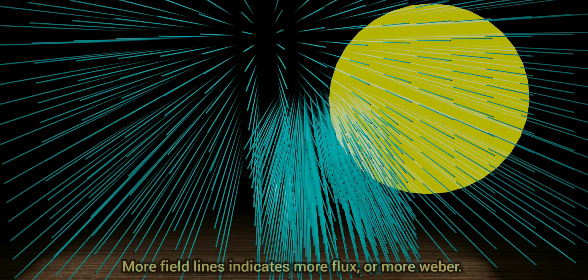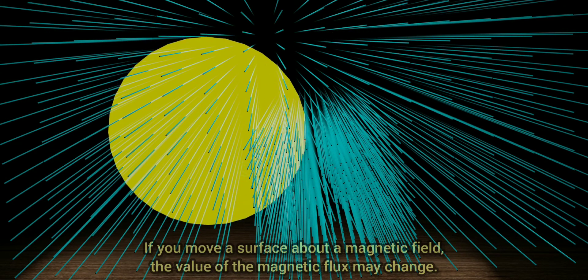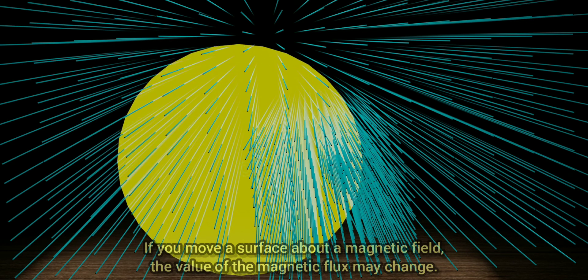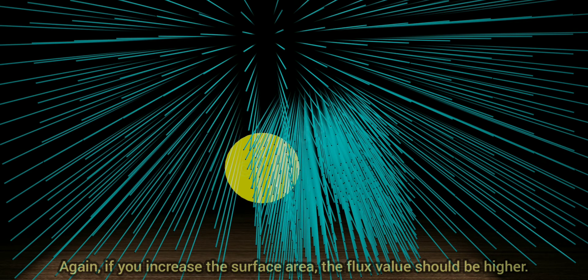More field lines indicates more flux, or more Weber. If you move a surface about a magnetic field, the value of the magnetic flux may change. Again, if you increase the surface area, the flux value should be higher.